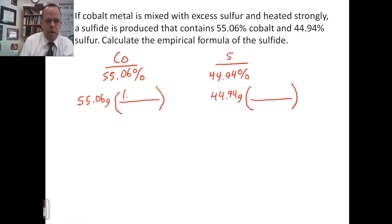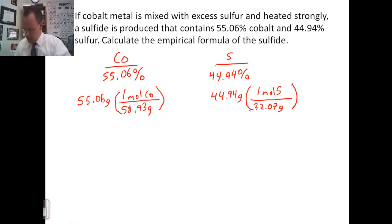Okay, cobalt, we're going to go to moles, step one. One mole of cobalt is 58.93 grams. One mole of sulfur is 32.07 grams. So, I need to divide each of these to get the moles. I get 0.9343 moles here. And I get 1.401 moles here.